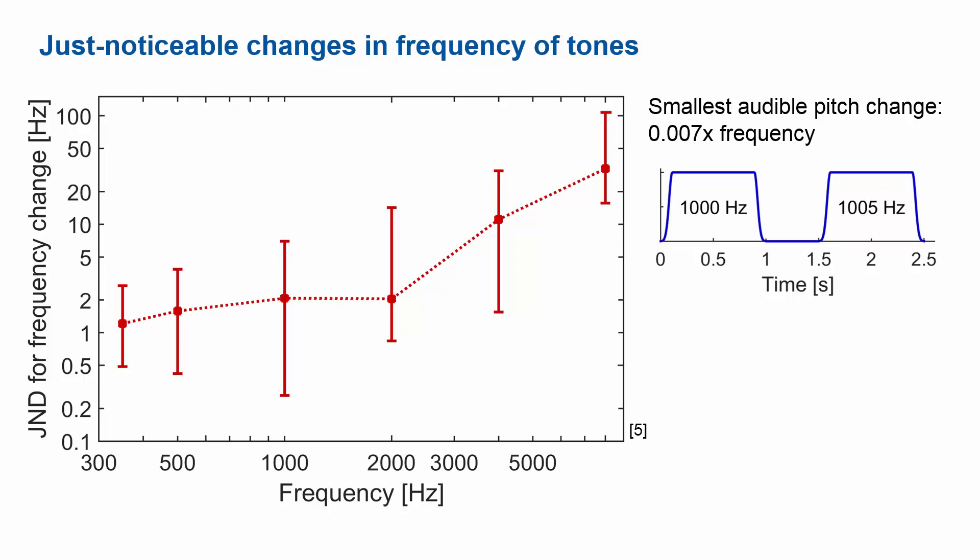Pitch JNDs, pitch perception per critical band, and the position of the basilar membrane are all related quantities. They all come from how the anatomy of the ear divides critical bands on the basilar membrane.